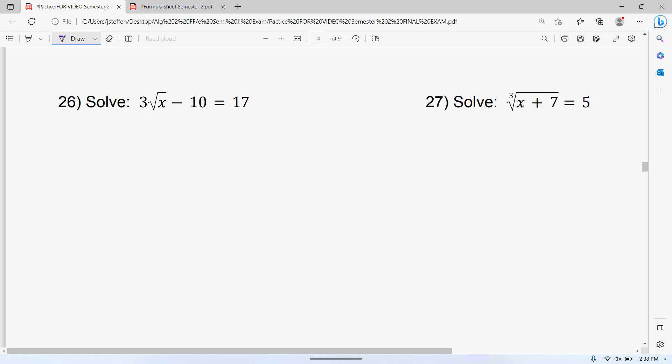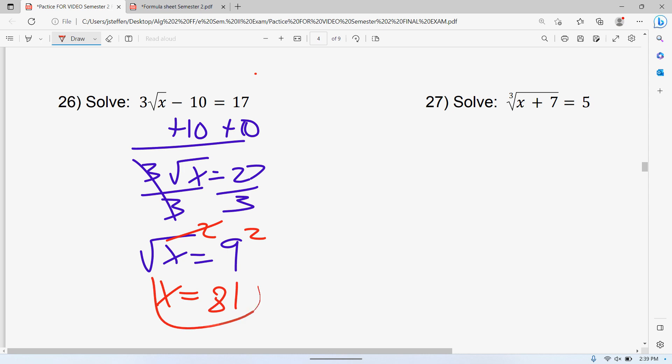So 26, add 10 to both sides and then 3 times the square root of x is equal to 27. Divide both sides by 3, square root of x equals 9. And when we isolate the square root, we square both sides. A lot of people tried to take the square root on that last part. Also remember you don't need two answers for this one because you only need two answers when you cancel out a squared. We never cancel the squared. If you cancel the square root, that doesn't count.